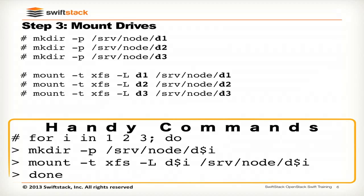The next thing we're going to do is create a place for these formatted devices to be mounted. We're going to make directories with mkdir -p so it builds the full path. Then we're going to mount by label for each one of those devices we just created.